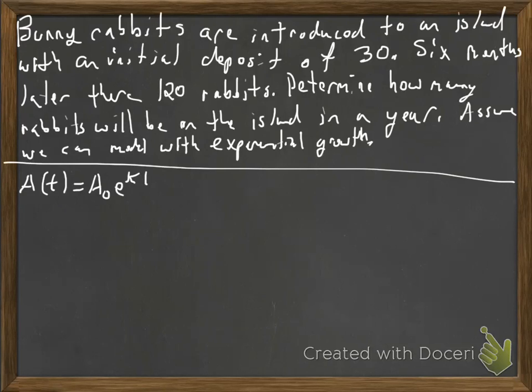So we're going to operate under the assumption that, in this example, the bunny rabbits will have sufficient food and sufficient area and a lack of predators, so that our exponential model will accurately model the population of bunny rabbits.